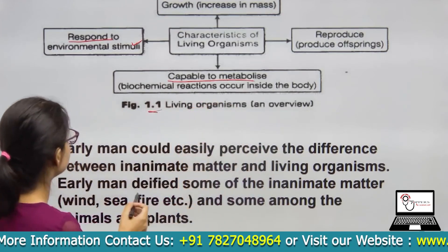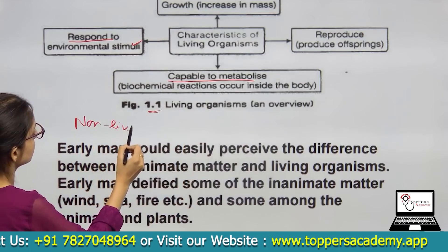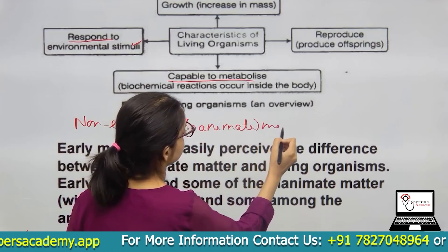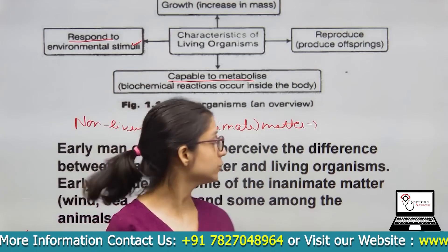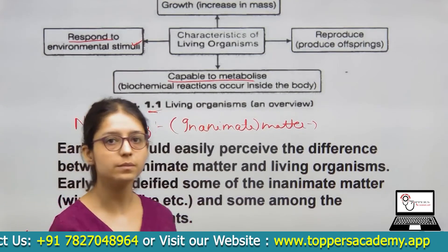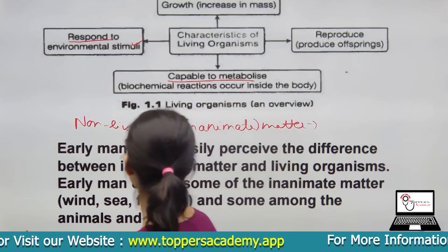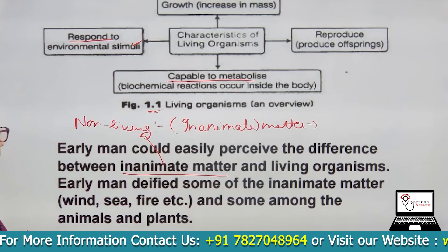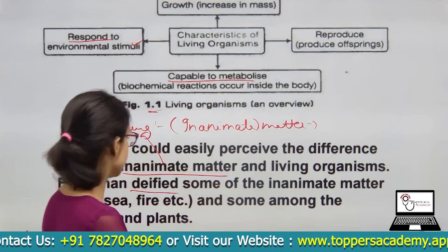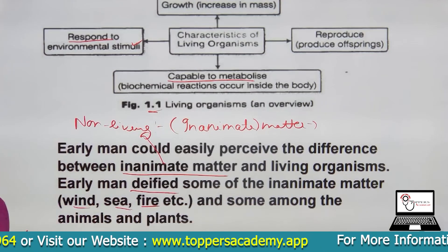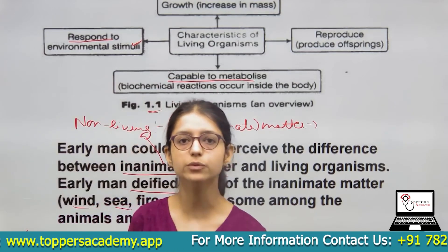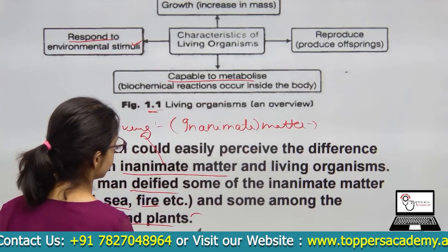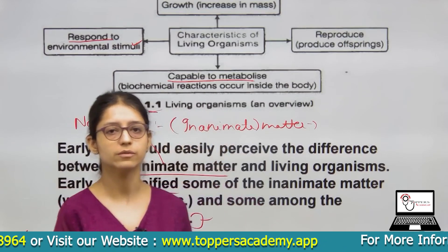Non-living things are referred to in the NCERT as inanimate matter. Non-living things are those which cannot perform their basic metabolic functions. Early men could easily perceive the difference between inanimate matter and living organisms. Early men worshipped some inanimate matter such as wind, sea, and fire. Tribes also used to worship mountains, plants, and animals — for example, in Chhattisgarh, tribes used to worship trees.